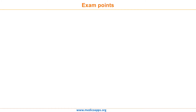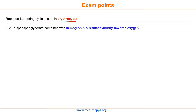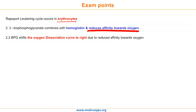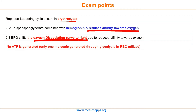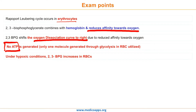Let's review the main exam points asked from this cycle. Point 1: the Rapoport-Luebering Cycle occurs in erythrocytes. Point 2: the significance of this cycle is mainly that 2,3-bisphosphoglycerate combines with hemoglobin and reduces affinity towards oxygen. Point 3: 2,3-bisphosphoglycerate shifts the oxygen dissociation curve to the right due to reduced affinity towards oxygen. Point 4: there is no ATP generation in this cycle, as one ATP generated during glycolysis in the RBCs is utilized. Point 5: under hypoxic conditions, 2,3-bisphosphoglycerate increases in RBCs.